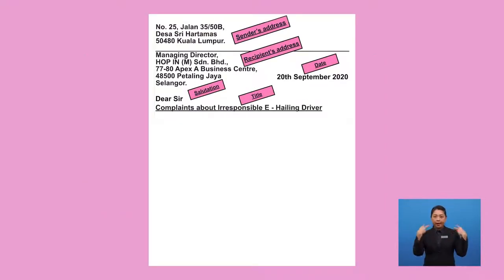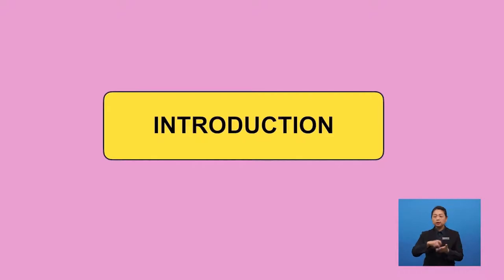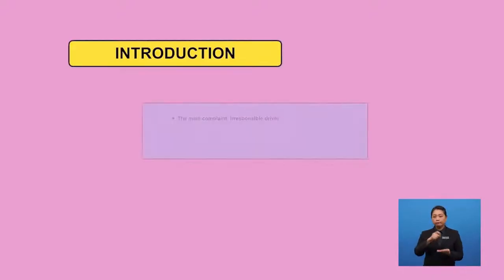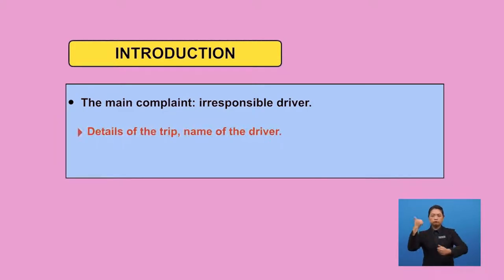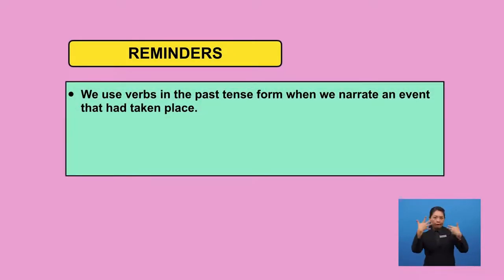Before we proceed, here is what we have on the paper so far. We have come to another item — the introduction. The introduction should contain a brief overview of what had taken place, the details of the incident, and state the issue the writer wishes to address. We can write about the main complaint, the irresponsible driver, details of the trip, name of the driver, and details of the ride. Please remember that we are narrating an event that had already taken place, so make sure we use verbs in the past tense form.